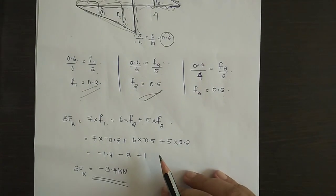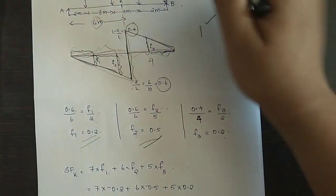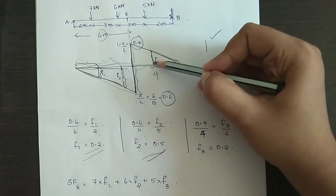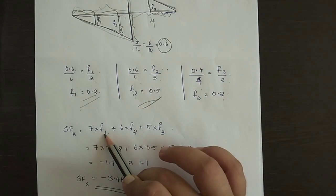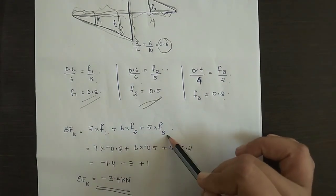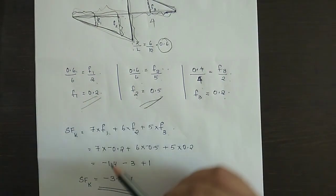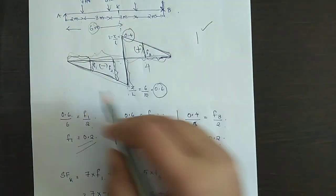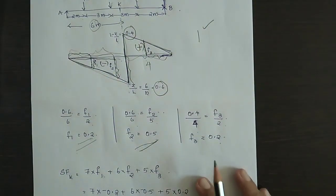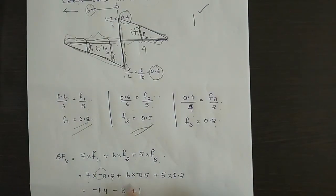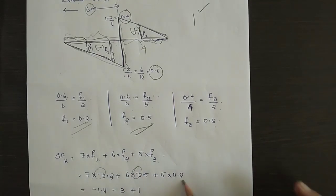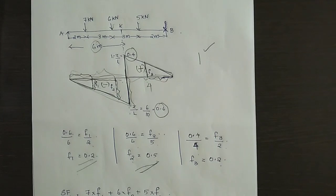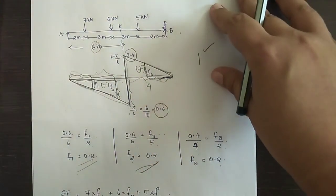Shear force equals the summation of each load multiplied by its corresponding ILD intercept. Since F1 and F2 lie in the negative zone and F3 in the positive zone: shear force equals 7 into (minus 0.2) plus 6 into (minus 0.5) plus 5 into (plus 0.2), which gives a final value of minus 3.4 kN. Therefore, shear force at section K is minus 3.4 kN.